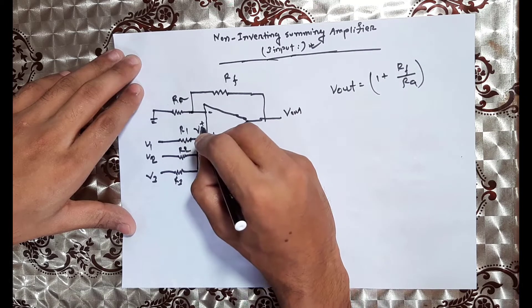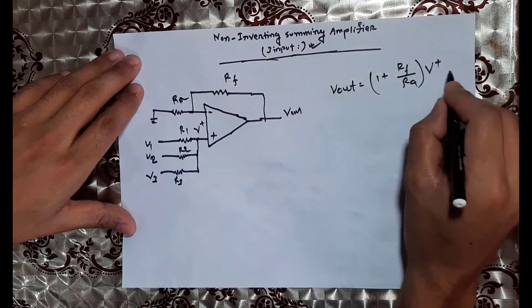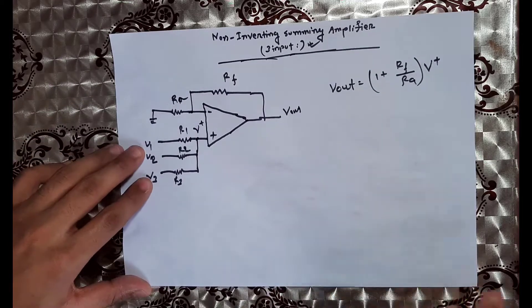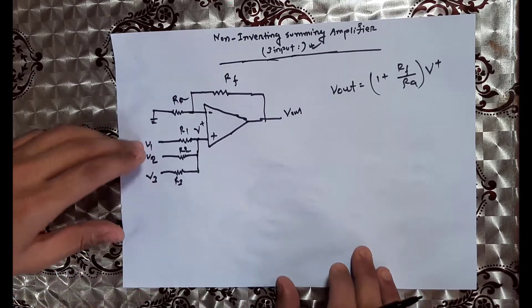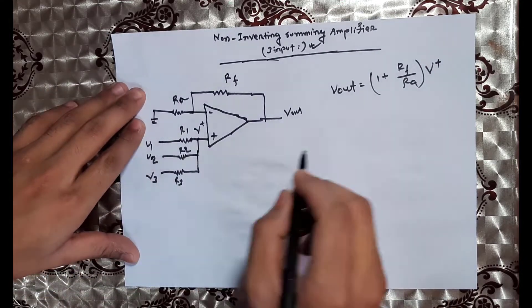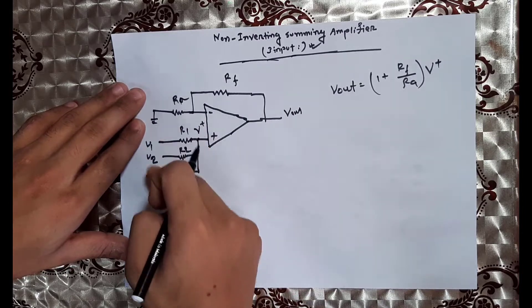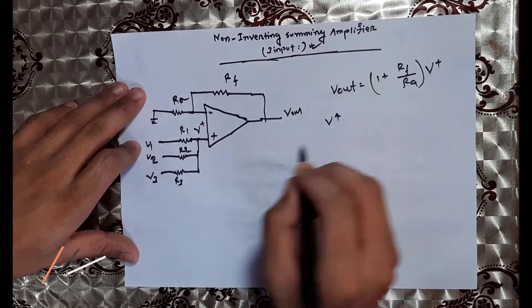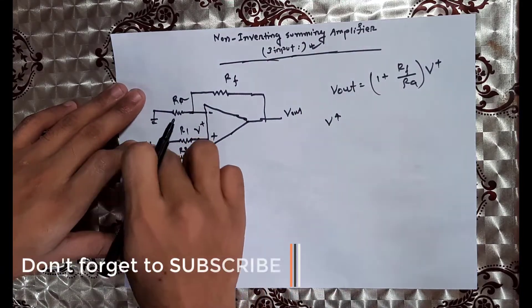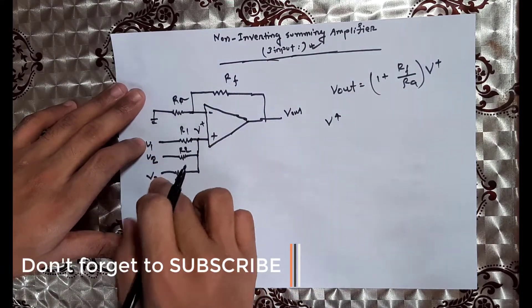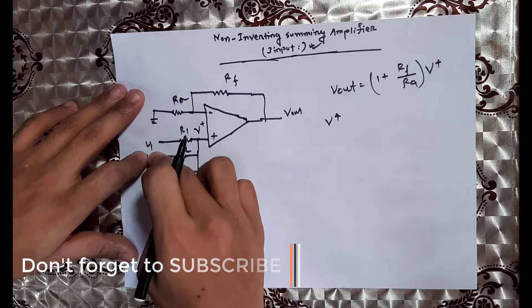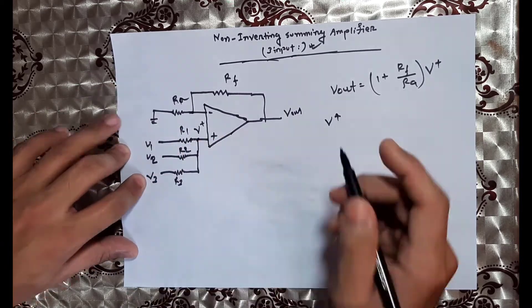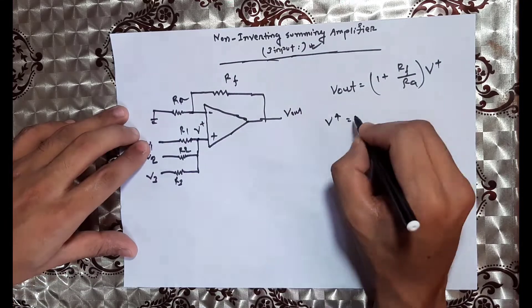We analyze V+. When V1 is active, V3 is set to zero. When V3 is zero, then V1 and V2 contributions can be evaluated separately using superposition.